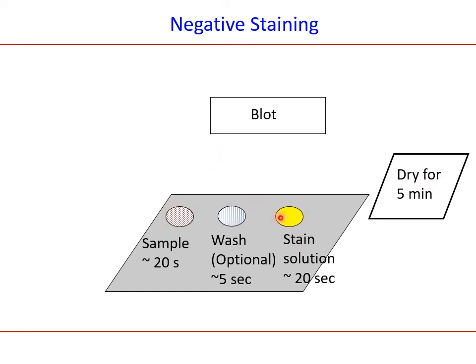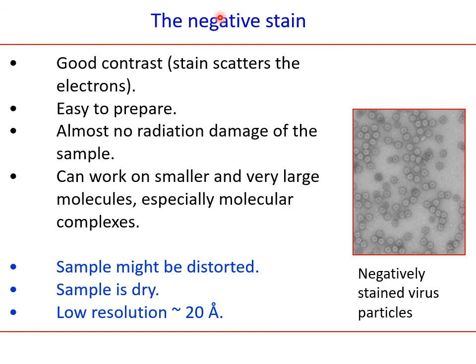The key point is that the grid must be dried completely after staining, not in between the sample-to-wash or wash-to-stain steps. That is a brief outline of negative staining. In the next class we will discuss the features of negative stain — its strengths, its weaknesses, how it looks — and then we will talk about cryo-EM. Thank you very much.